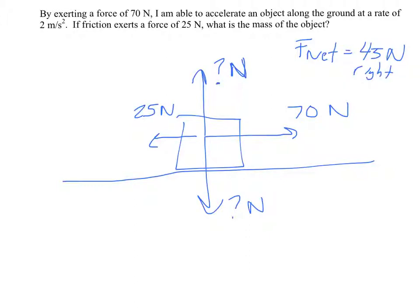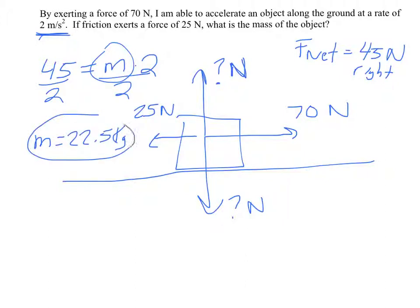And according to this, it is accelerating at 2 meters per second squared. So the net force is 45, the mass is unknown, the acceleration is 2, so we're solving for m. So we're going to divide both sides by 2, so the mass is 22.5 kilograms of this box.